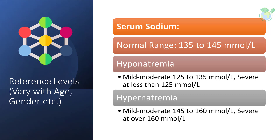Serum sodium has a normal range of 135 to 145 mmol/L. The clinical significance associated with hyponatremia includes low dietary sodium intake, primary polydipsia, SIADH, congestive heart failure, hepatic cirrhosis, failure of adrenal glands, hyperglycemia, or dyslipidemia. On the contrary, clinical manifestations associated with hypernatremia include unreplaced fluid loss through the skin and gastrointestinal tract, osmotic diuresis, and hypertonic saline administration, amongst others.